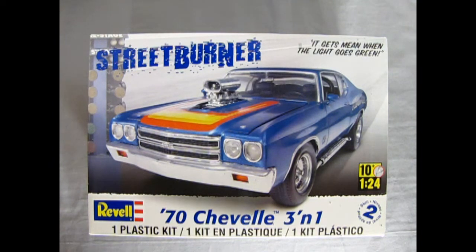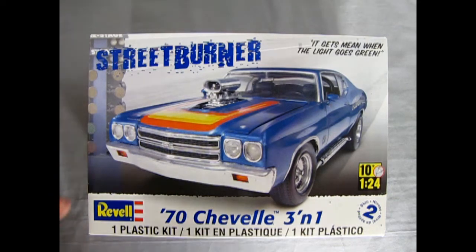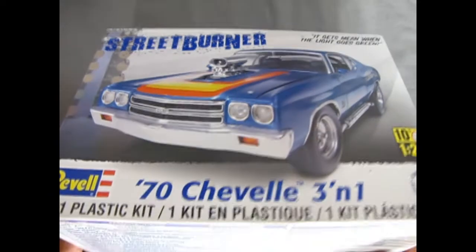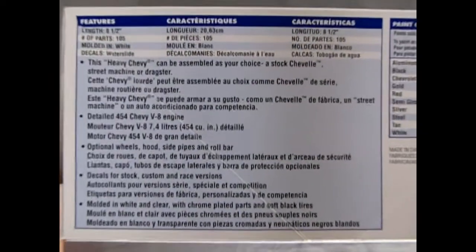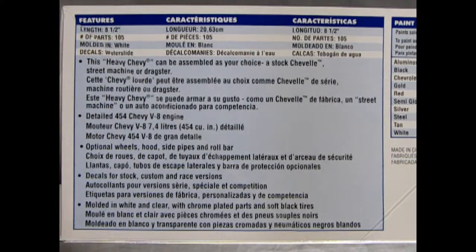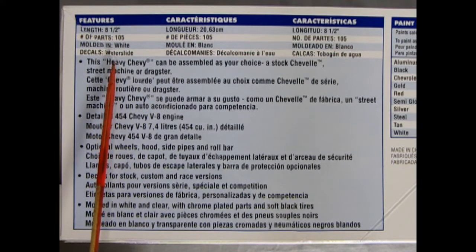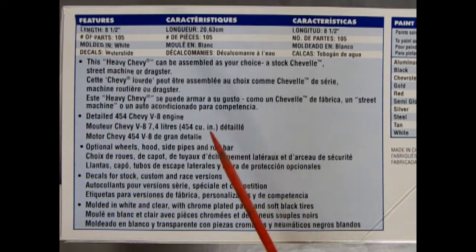I've built this in the past and in this kit you do get three different building options. So let's turn our box up here and zoom in on the side. It's eight and a half inches long when built. You get 105 parts molded in white and the decals are water slide.